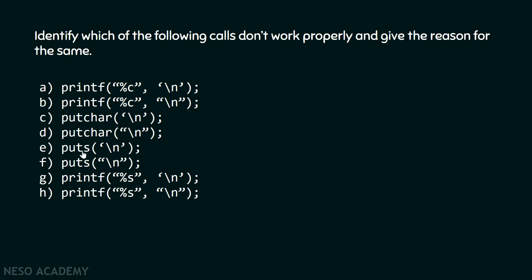What about this puts function? The puts function's job is to put a string on the screen, so it expects a string, but what we are passing to it is a character — hence it won't work properly. But the second puts function will work properly because we are passing a string to it.